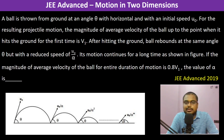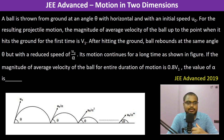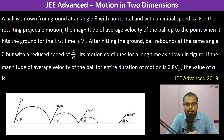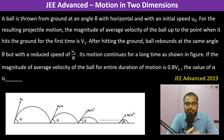The ball is thrown from the ground at an angle theta with the horizontal, with an initial speed U₀. For the resulting projectile motion, the magnitude of the average velocity of the ball up to the point when it hits the ground for the first time is V₁. After hitting the ground, the ball rebounds at the same angle theta but with reduced speed U₀ by alpha. The magnitude of average velocity for the entire duration of motion is 0.8V₁. Find the value of alpha.